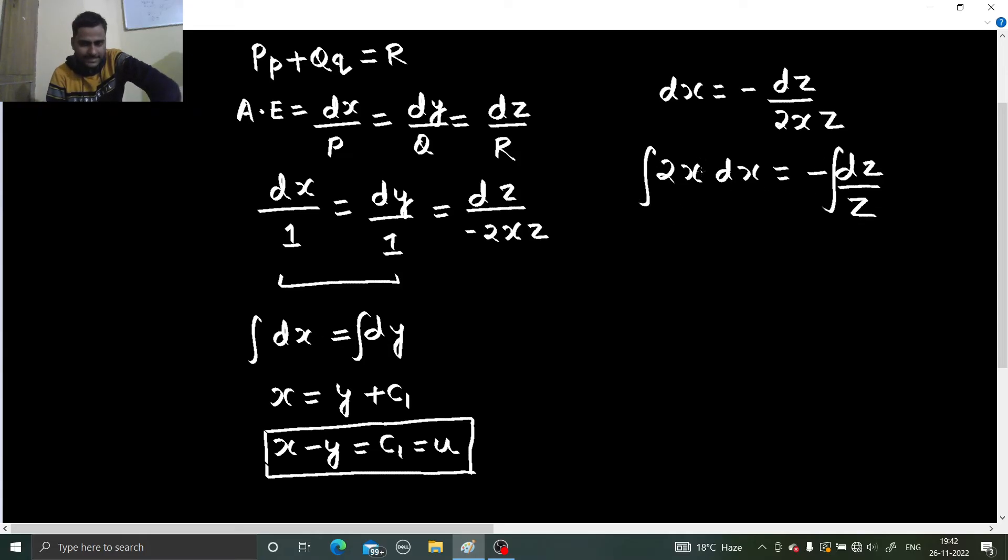Integral of x is x square by 2. I also have a 2 here. So 2x square by 2, dz by z log z. Fine. And you get a constant which I can take as log c2. Fine.